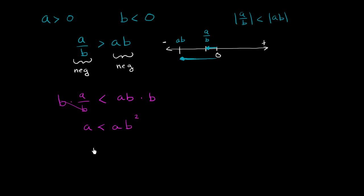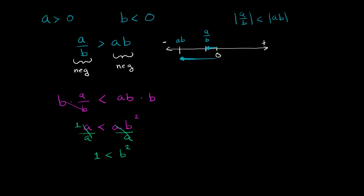Now if we want to simplify it, we can divide both sides by a. And since a is greater than 0, it does not change the inequality. So we divide both sides by a — this becomes 1, and this just becomes b squared. So we're left with 1 is less than b squared.